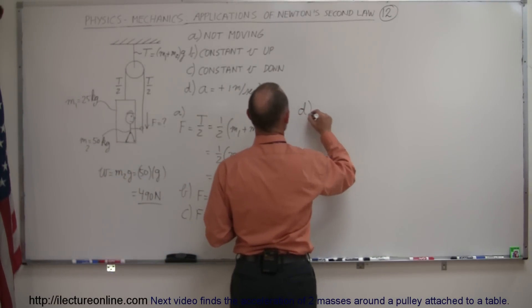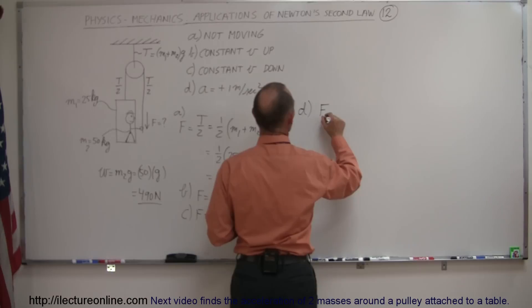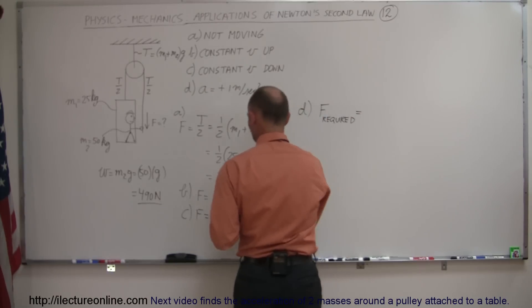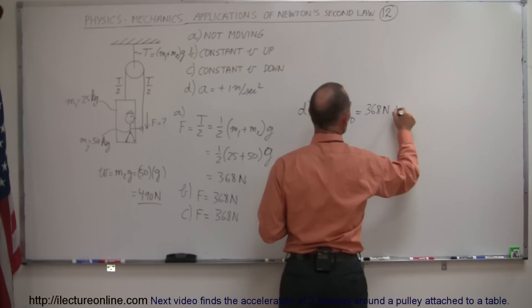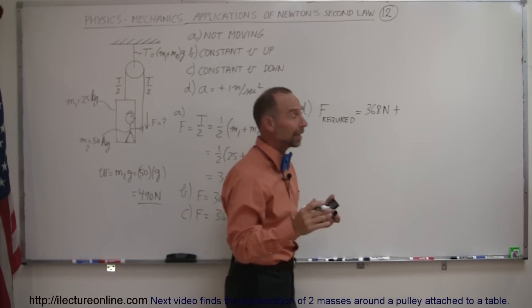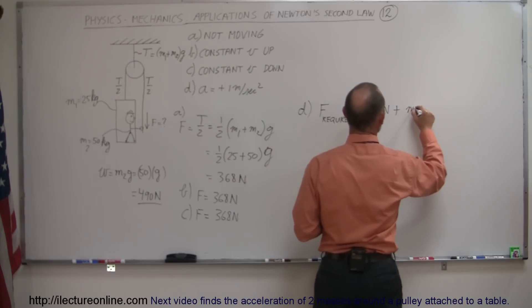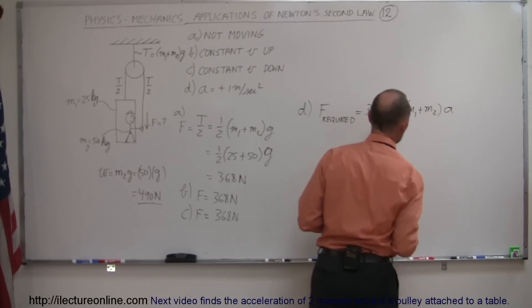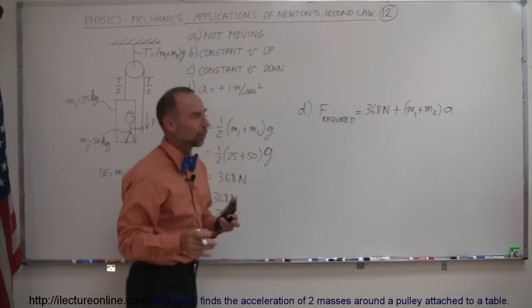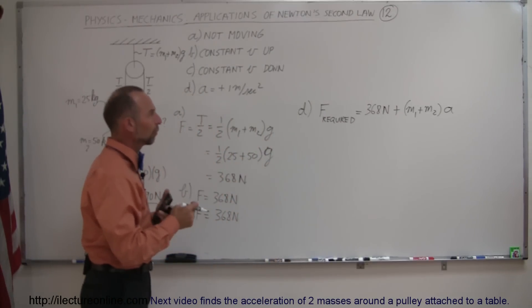So in part D, that means the force required is going to be equal to the force needed to hold it in place, the 368 newtons, plus the force required to accelerate it. So plus the m1 plus m2 times the acceleration. And notice that the person has to pull with enough force to accelerate the whole system.